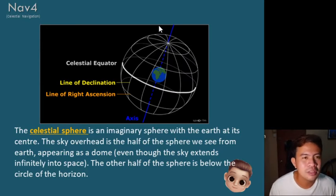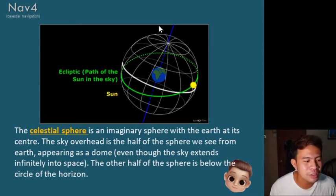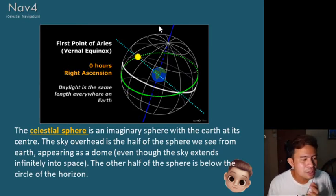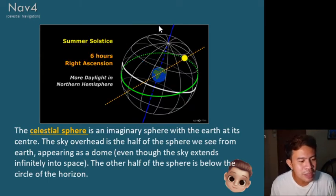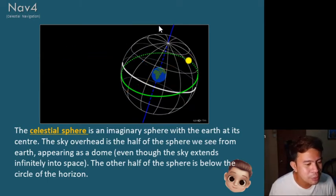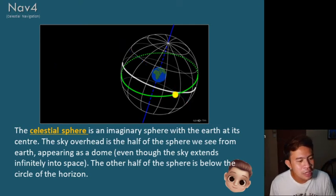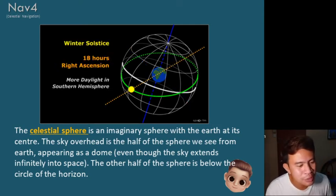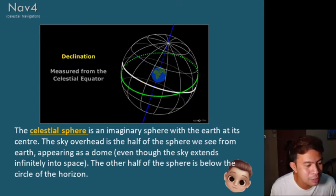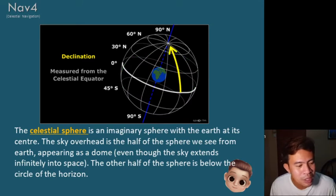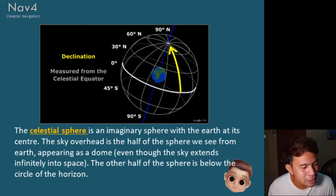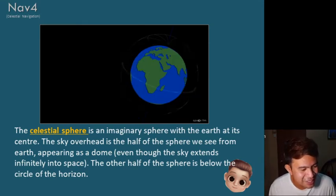Now we are talking about the celestial sphere. When we say a celestial sphere, it is an imaginary sphere with the Earth at its center. The sky overhead is half of the sphere we see from the Earth, appearing as a dome, even though the sky extends infinitely into space.